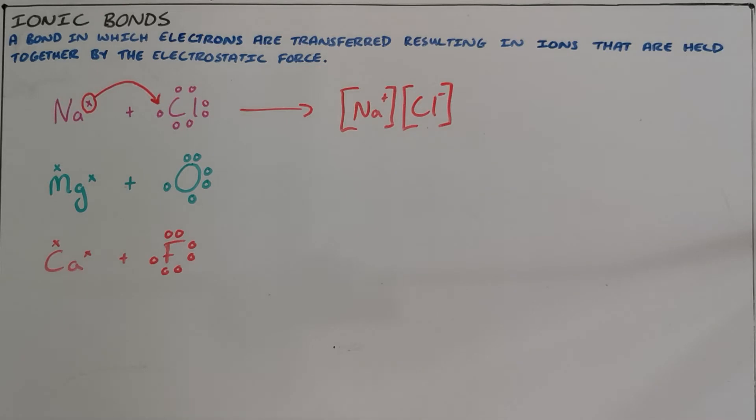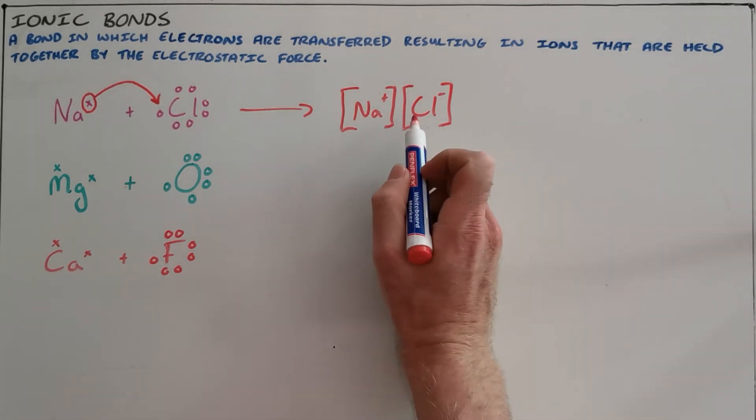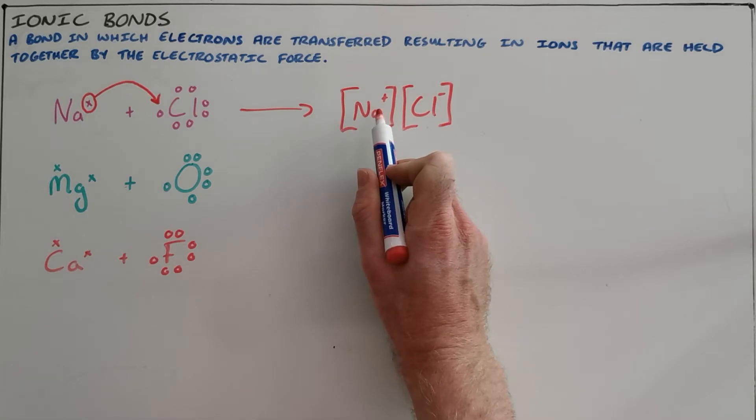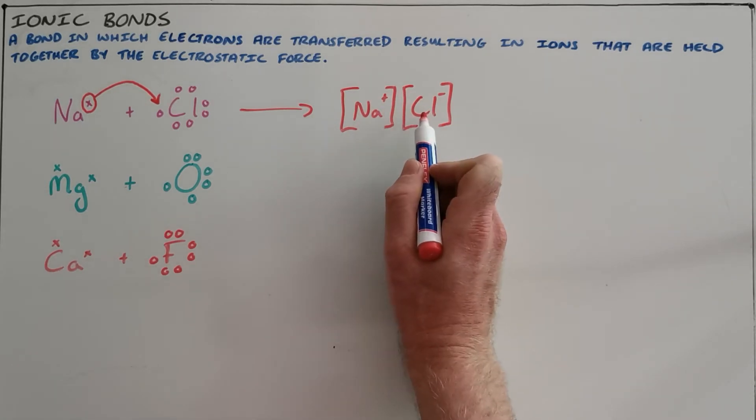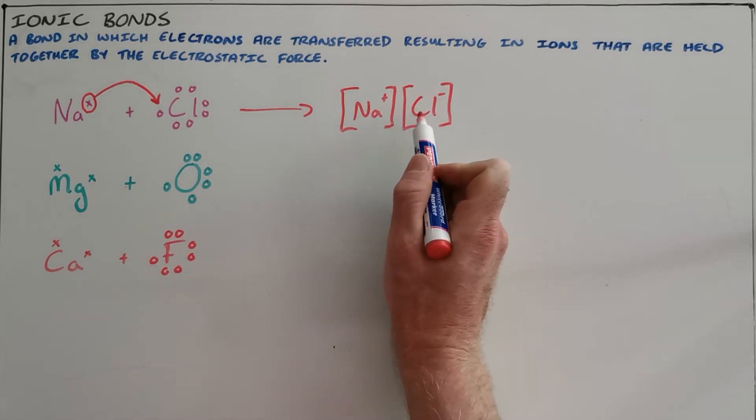Both of those now have full valence shells and they stick together or are held together because we have one positively charged object and another negatively charged object. As a result, they are held together by that electrostatic force.